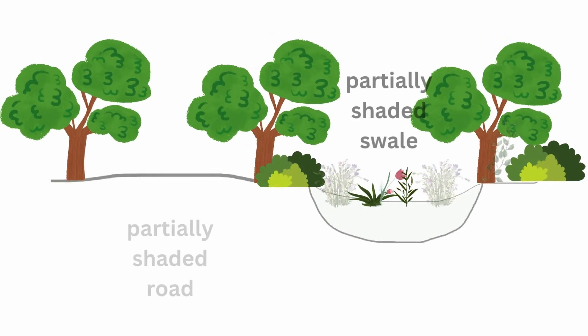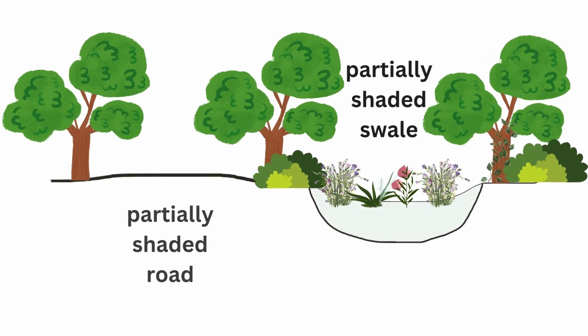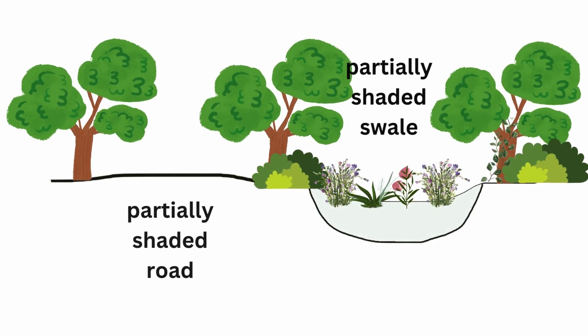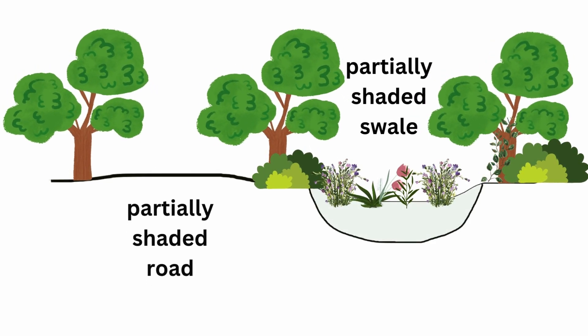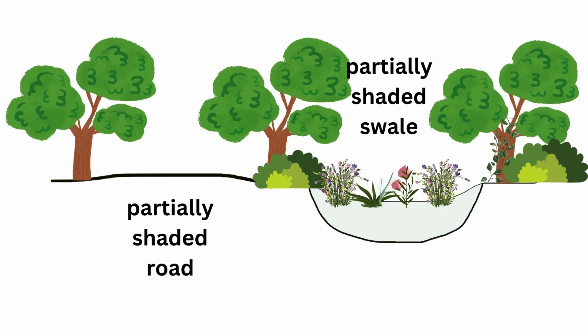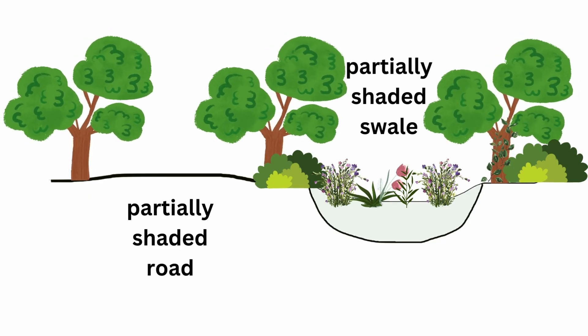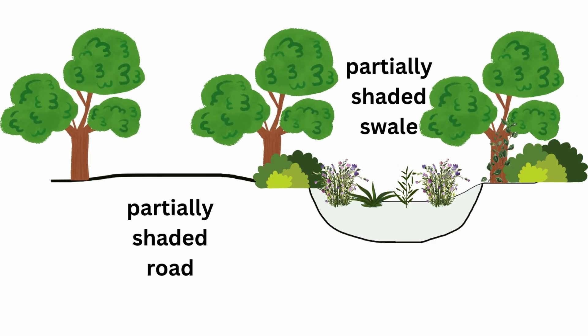Depending on the soil type, the swale base may be planted or ripped — like in hard pans — sanded in clays, or graveled in sands, which is all done for even better infiltration.